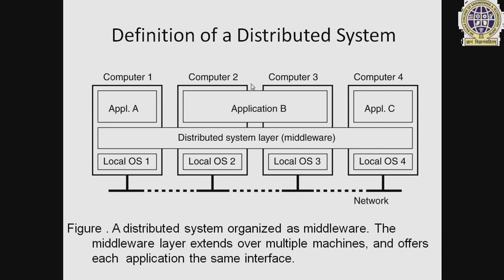Now here is the structure or architecture of a distributed system. The distributed system layer serves as middleware with multiple local operating systems, all working on a single network. We can accept any capabilities of the local operating system. This diagram is given the name: a distributed system organized as middleware. The middleware layer extends across multiple machines and offers each application the same interface.